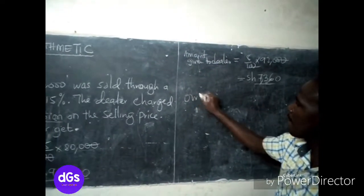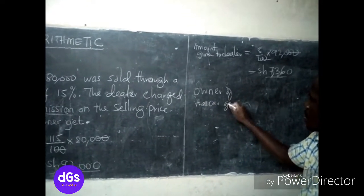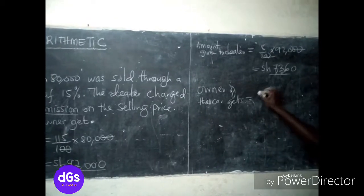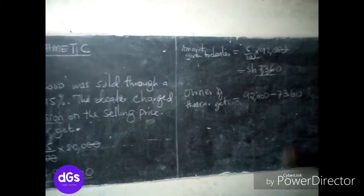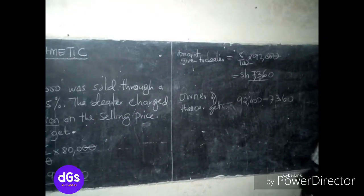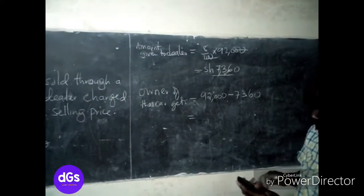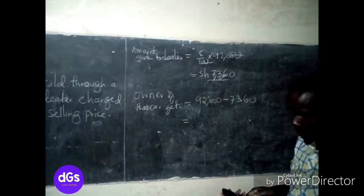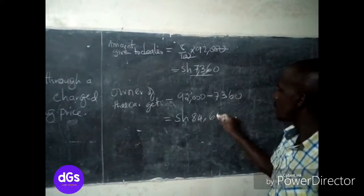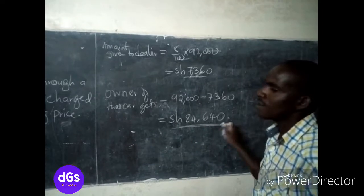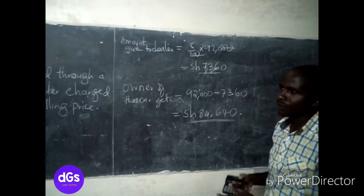So what does the owner of the car get? You take the 92,000 selling price and subtract the amount given to the dealer who organized and finalized the sale. So: 92,000 minus 7,360. The owner of the car finally gets 84,640 shillings.